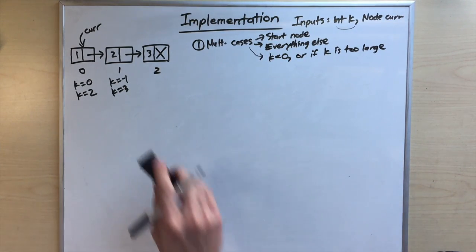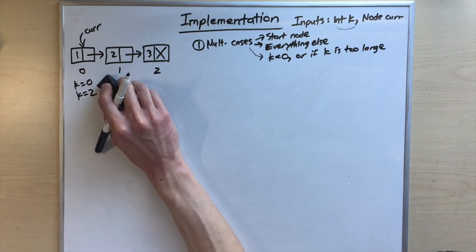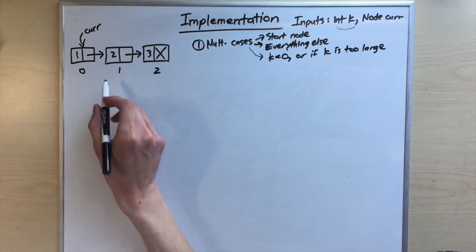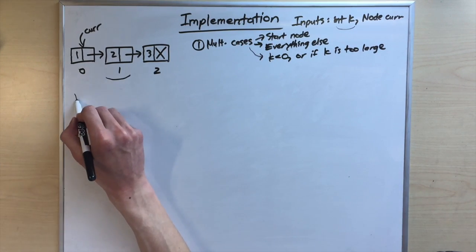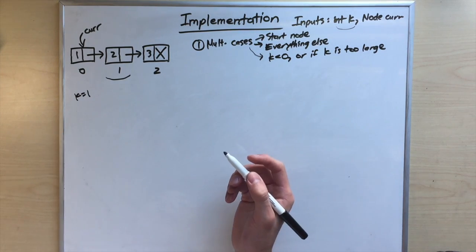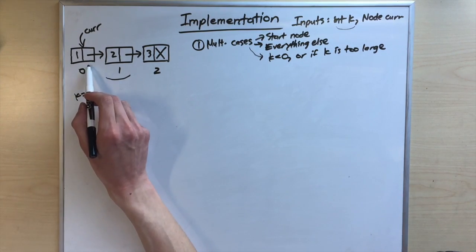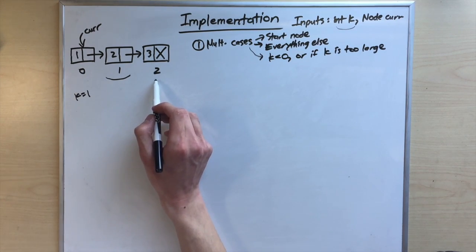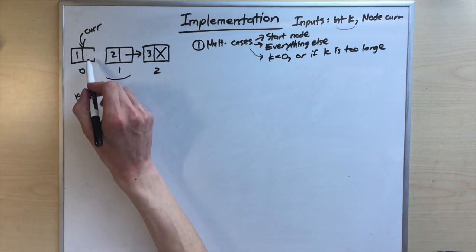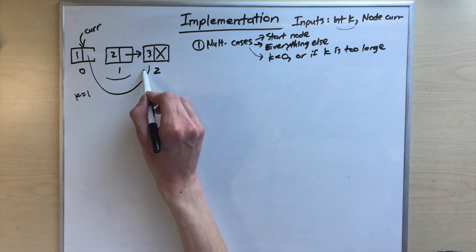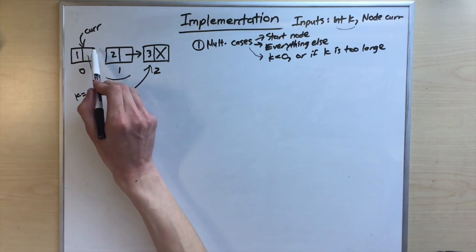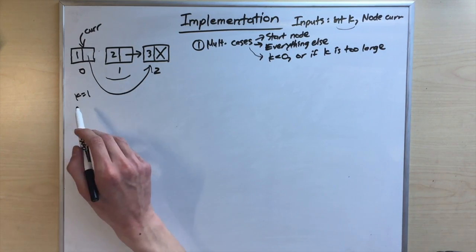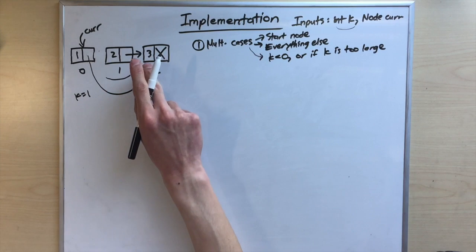To delete the middle node at k equals one, we need to connect the node at index zero to the node at index two. By changing that connection so the first node points to the third node, Java will destroy the middle node since nothing is pointing at it anymore.